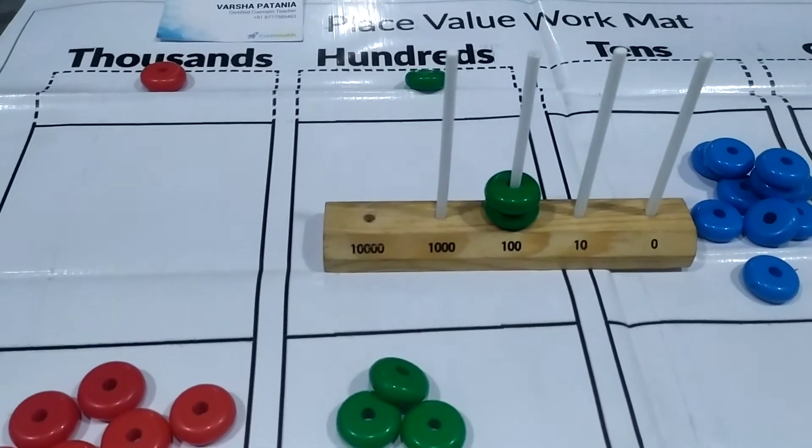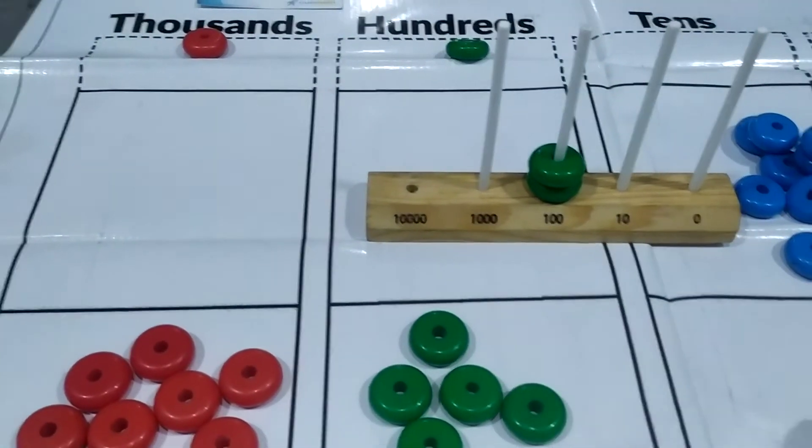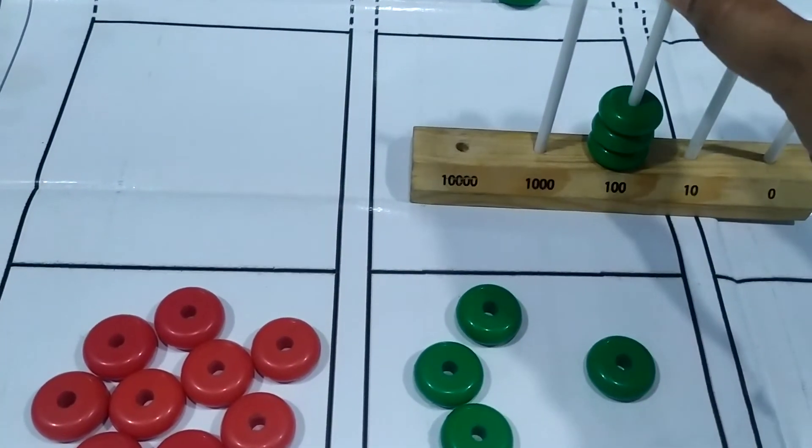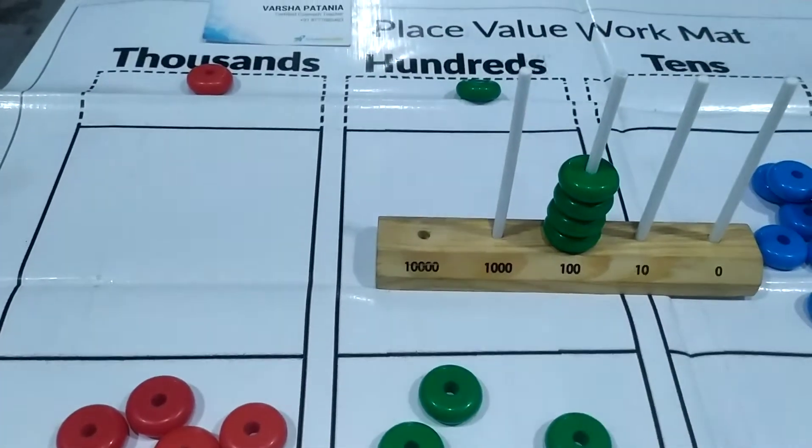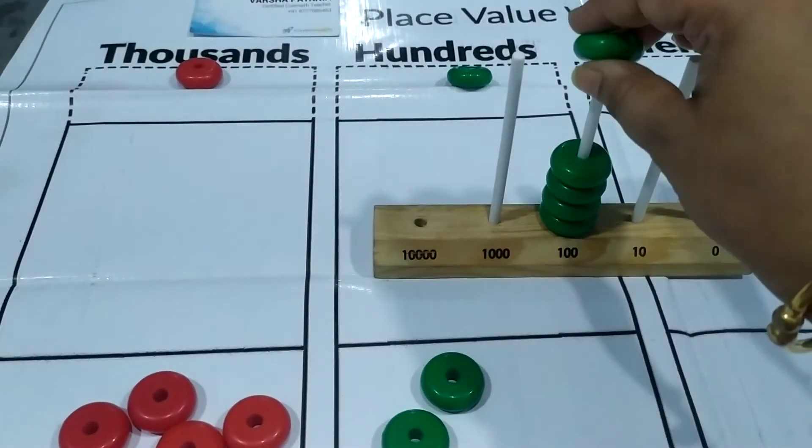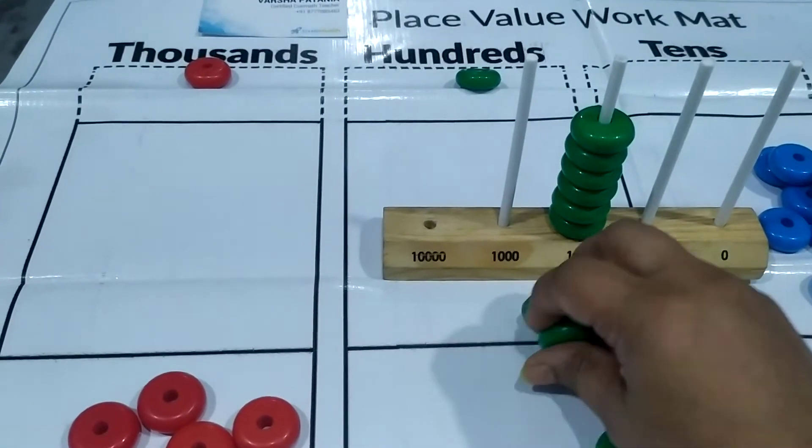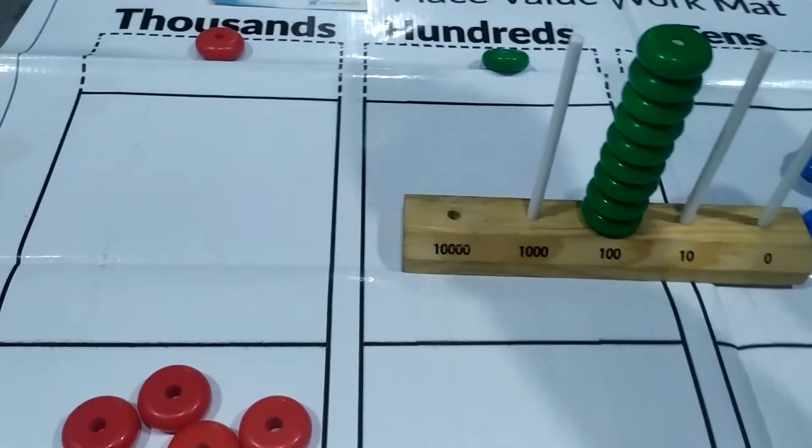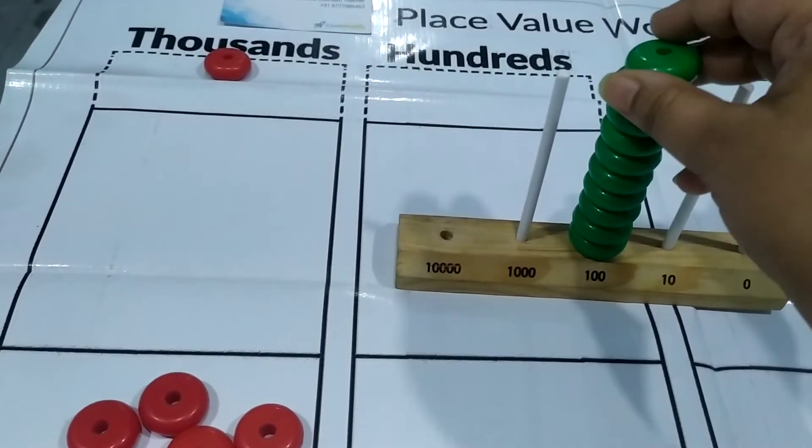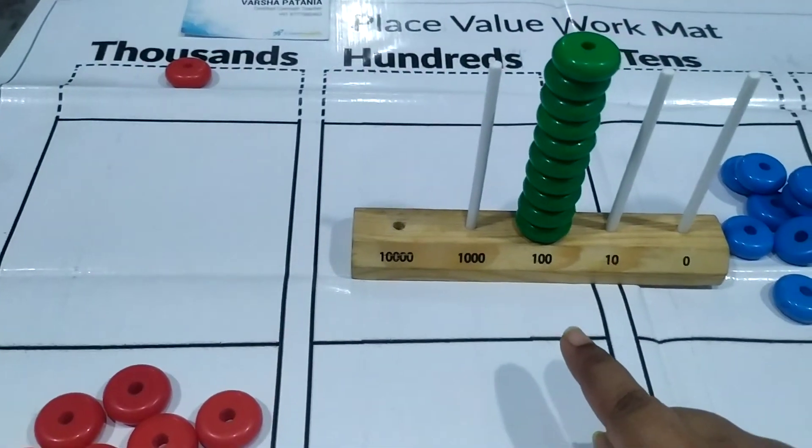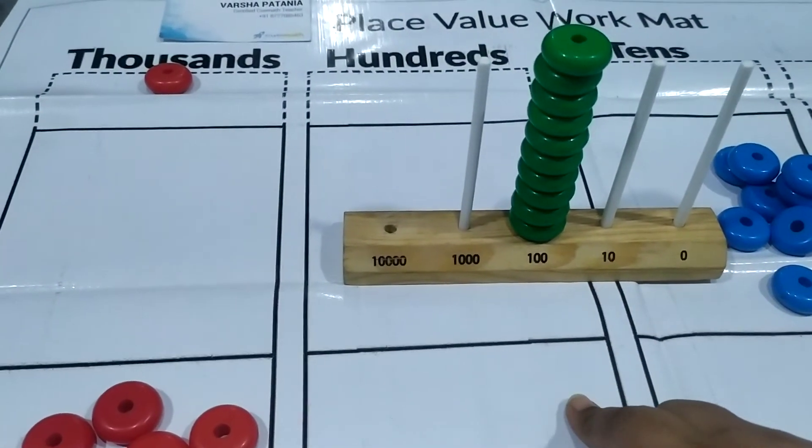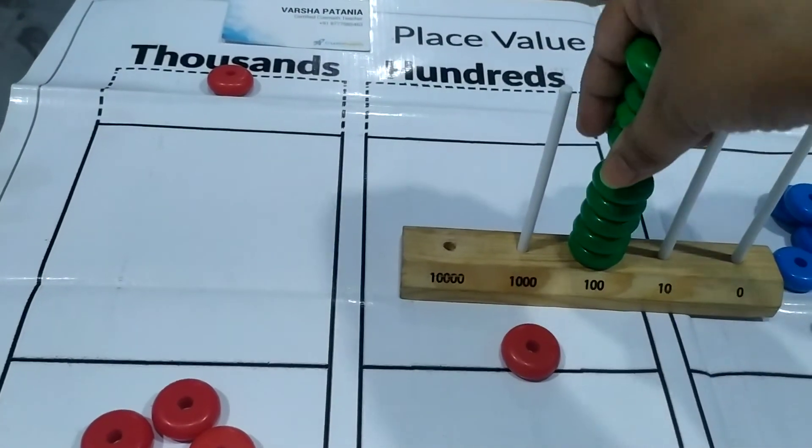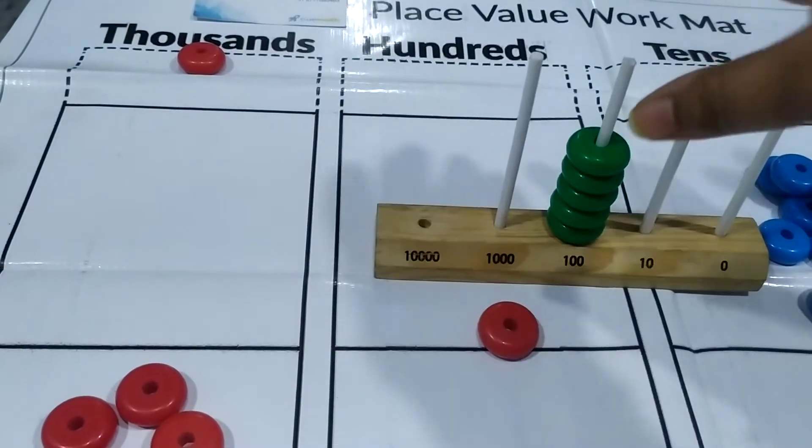So in the same way, the child will be counting one hundred, two hundred, three hundred and then when he reaches nine hundred like this: four, five, six, seven, eight, nine hundred. And if I put one more, it will make it ten hundreds. We have put ten hundreds and now this is equal to a thousand.